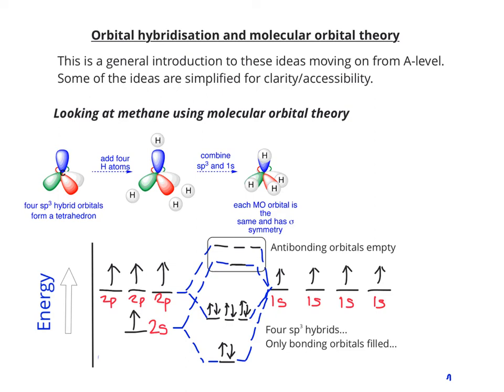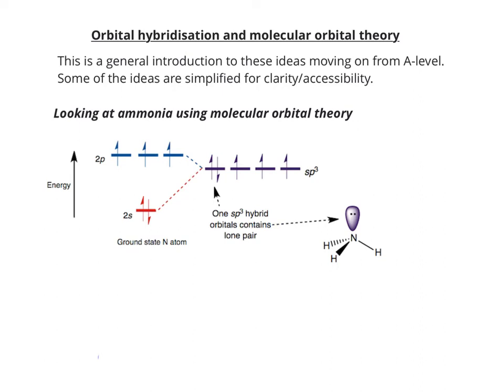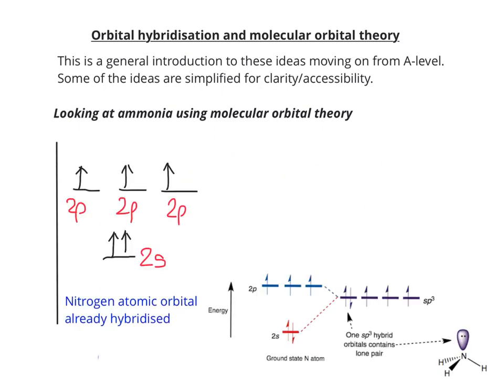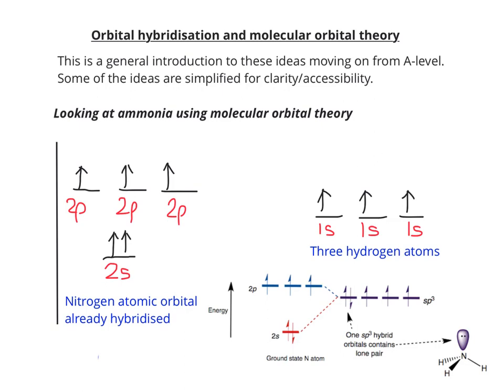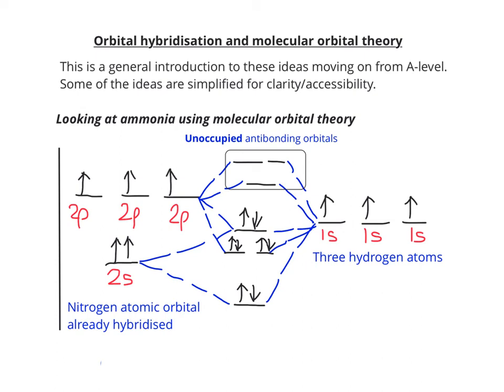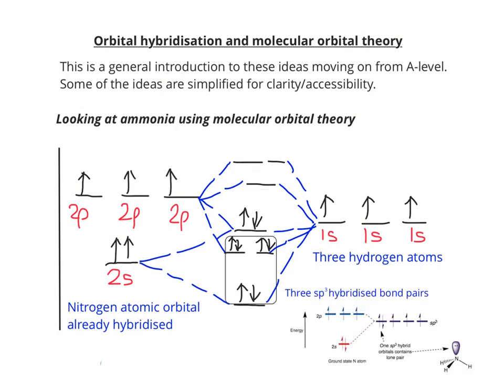Let's look at one or two other examples. In ammonia, we also get hybridisation taking place, and you can see where the lone pair comes from. Starting by hybridising the nitrogen atomic orbital, and lining up three hydrogen atoms, we get unoccupied antibonding orbitals, the lone pair on nitrogen, and three sp3 hybridised bond pairs.